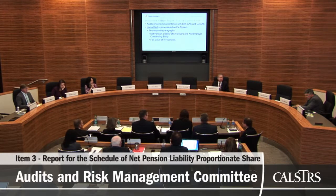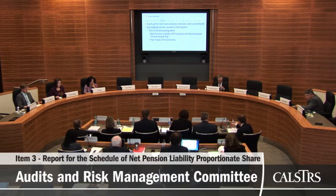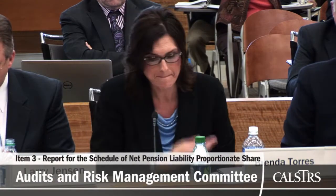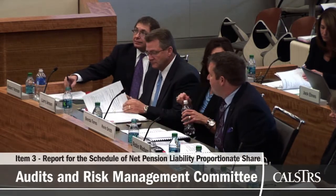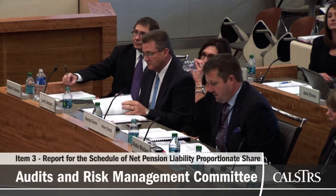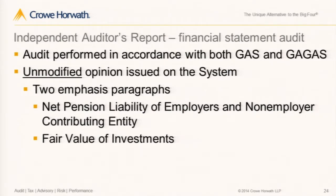Turning to page six in the materials, the first deliverable is an unmodified opinion on the financial statements, meaning the financial statements are prepared in accordance with generally accepted accounting principles, and the audit was performed in accordance with generally accepted auditing standards. The engagement was performed under two separate sets of standards: generally accepted auditing standards promulgated by the AICPA, and government auditing standards from the office of the comptroller, which set on top of generally accepted auditing standards.